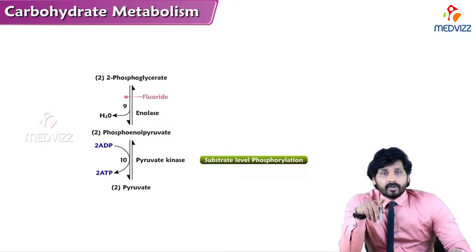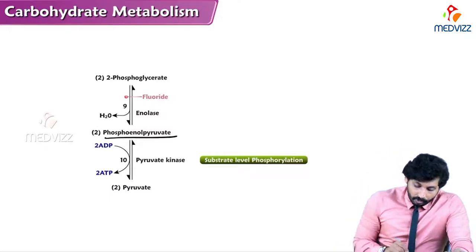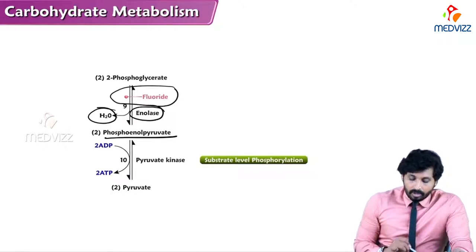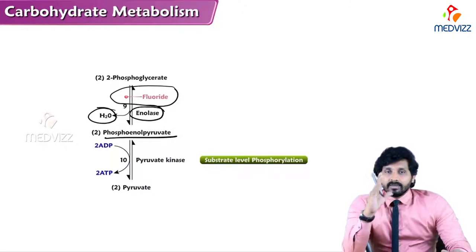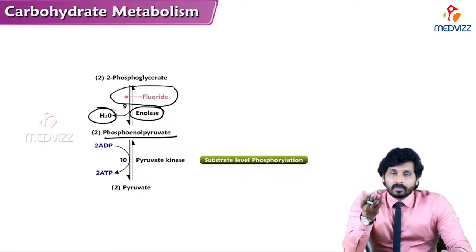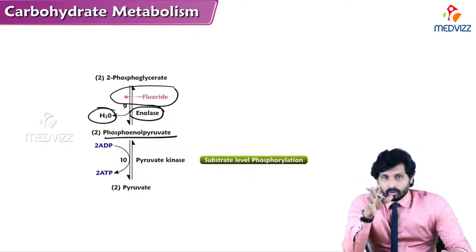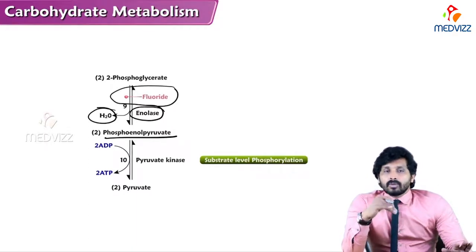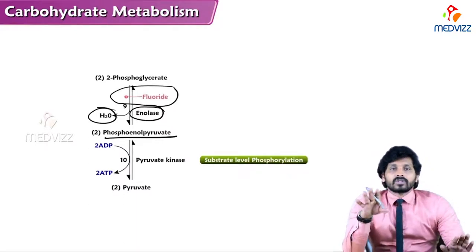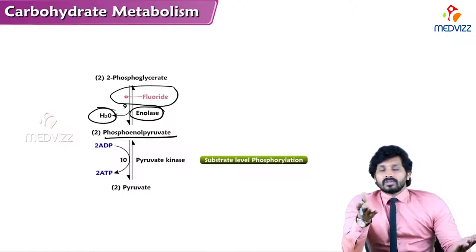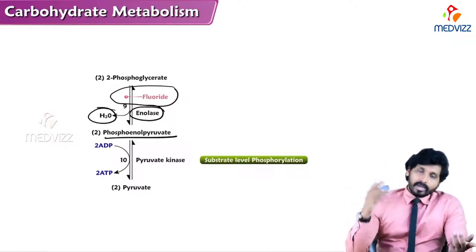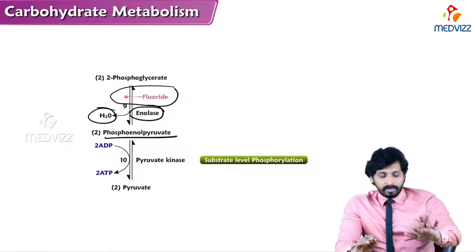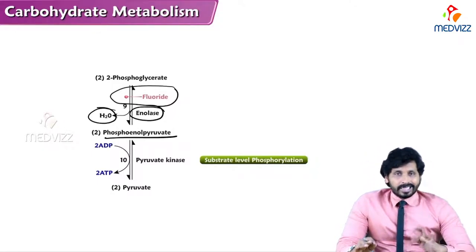2-Phosphoglycerate is converted to phosphoenolpyruvate by removing a water molecule via the enzyme enolase. This enzyme has clinical significance: when estimating blood glucose, blood is collected in sodium fluoride-coated tubes. Fluoride ions inhibit enolase, preventing complete oxidation of glucose and preserving glucose levels for accurate measurement.